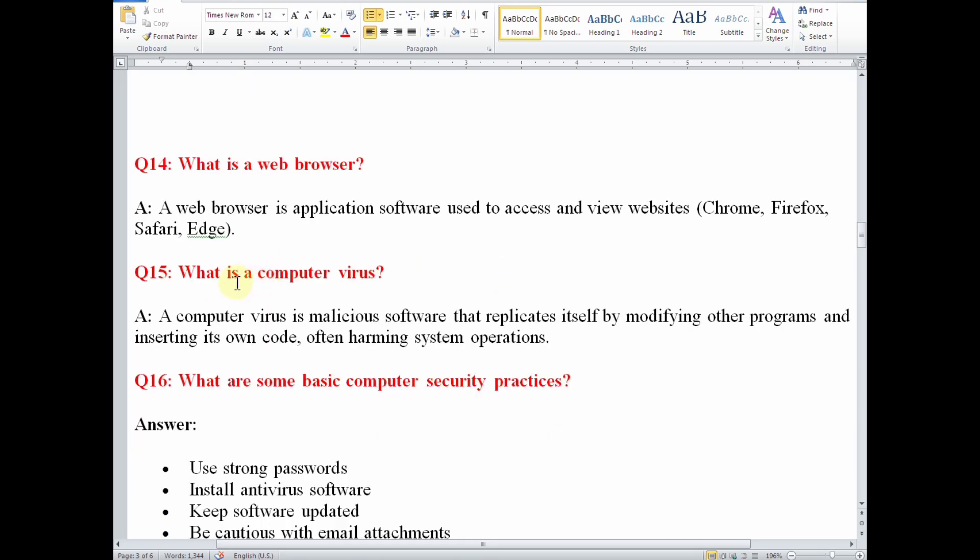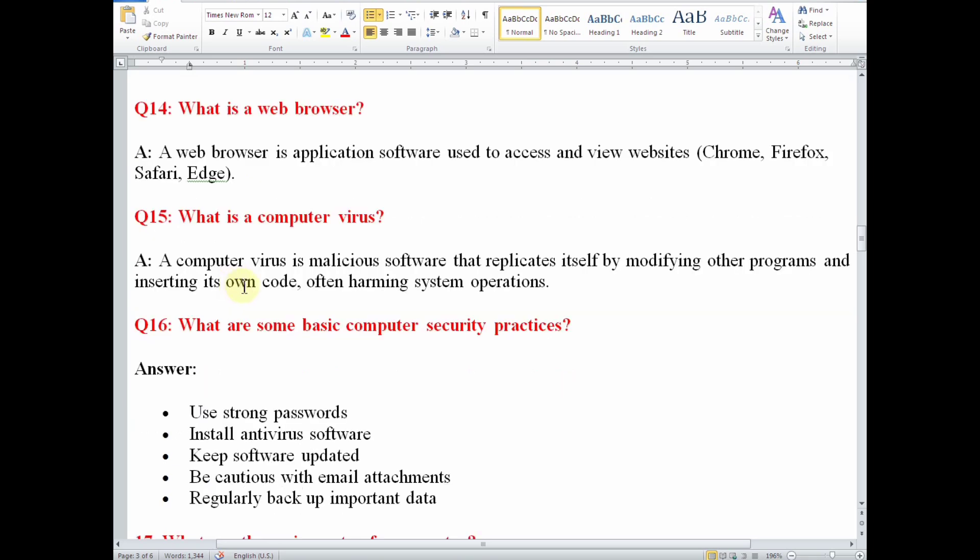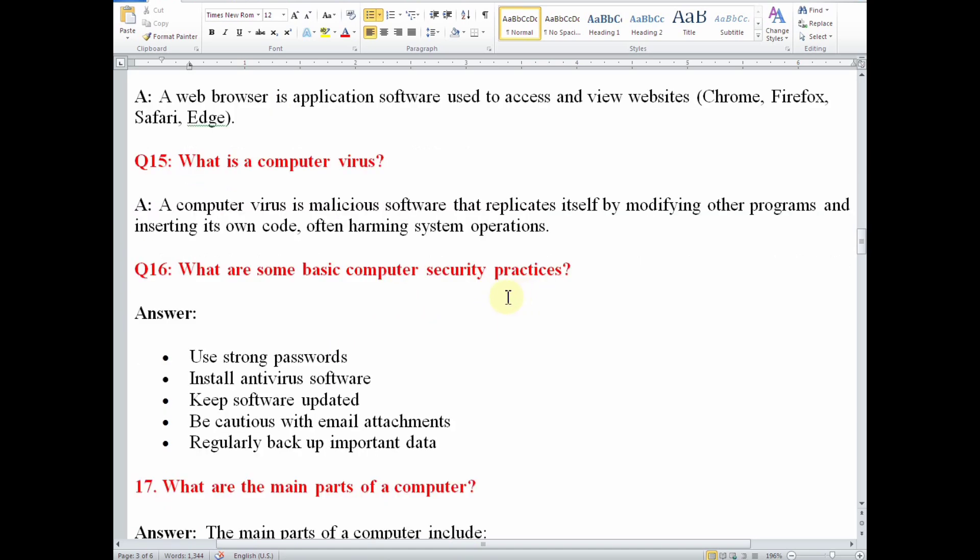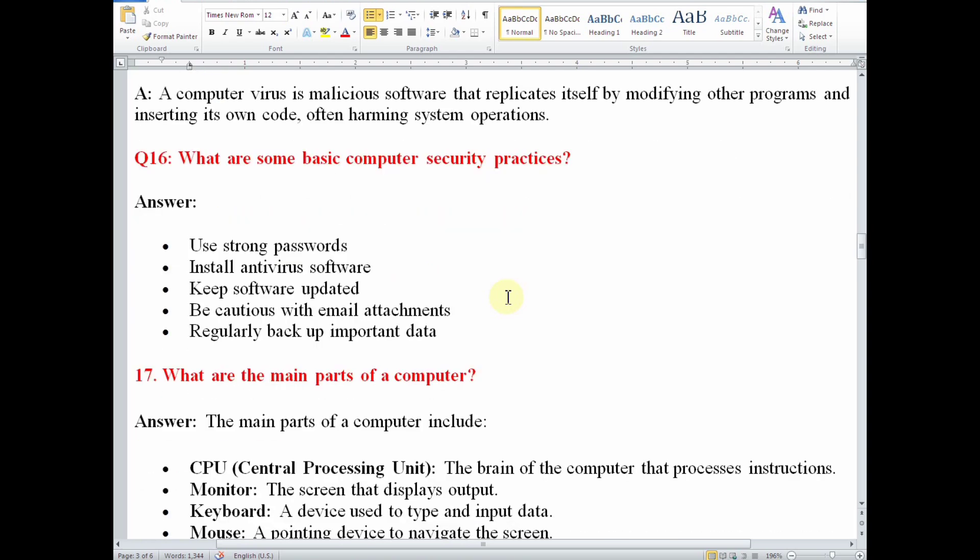Number 15, what is a computer virus? A computer virus is malicious software that replicates itself by modifying other programs and inserting its own code, often harming system operations. Number 16, what are some basic computer security practices? Use strong passwords, install antivirus software, keep software updated, be conscious with email attachments, regularly backup important data.